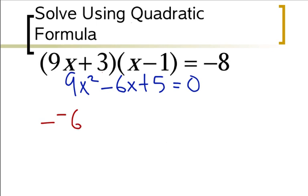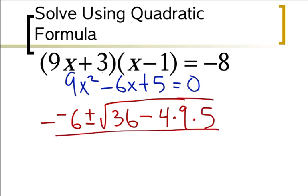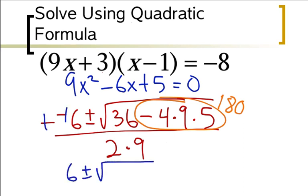So I have negative negative 6 plus or minus the square root of negative 6 squared, which is positive 36, minus 4 times a which is 9 times c which is 5, all over 2 times 9. That gives me 6 plus or minus the square root of 36 minus 180.